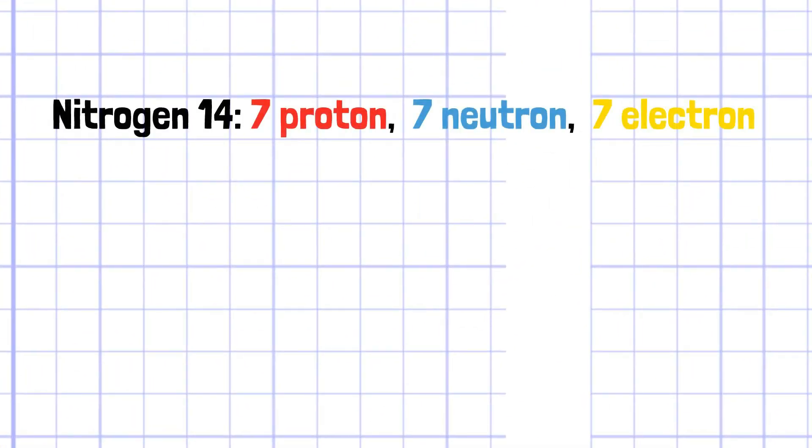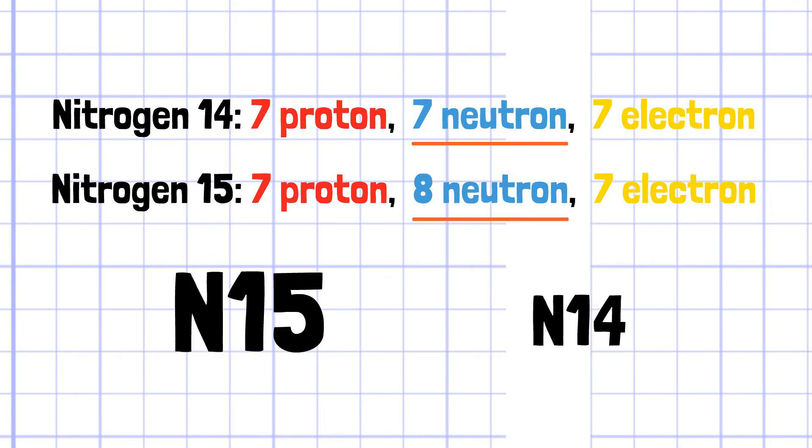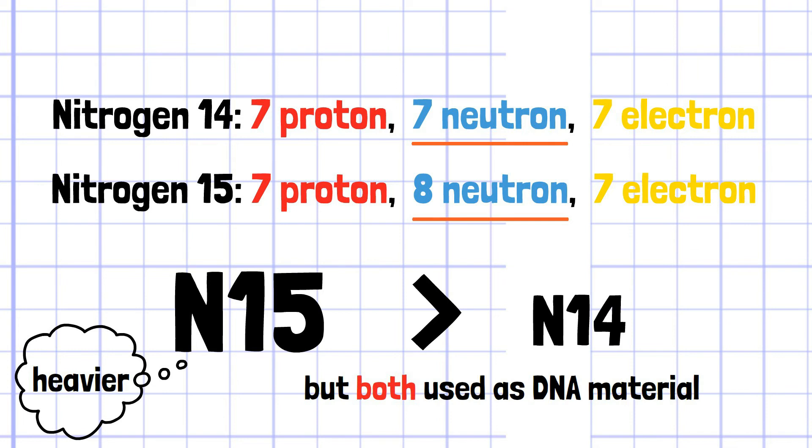Nitrogen-15 has one additional neutron compared to nitrogen-14, so the mass of nitrogen-15 is slightly heavier than nitrogen-14. Since they are the same atom, they can equally be used in biological structures, such as DNA.